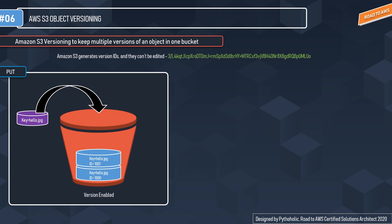By default, versioning for S3 is disabled. Regardless of whether you have enabled versioning, each object in your bucket has a version ID. If you have not enabled versioning, Amazon S3 sets the version ID to null — so objects in your bucket will still have a version ID, but it will be set to null. Once S3 versioning is enabled, S3 assigns a version ID to each object. Remember that versioning is applied at the bucket level, so it applies to all objects stored in it.